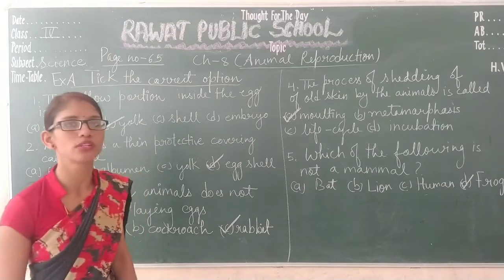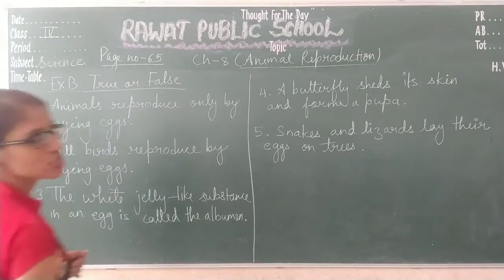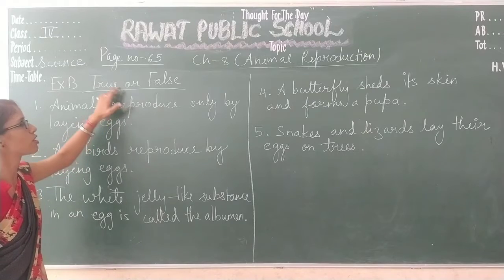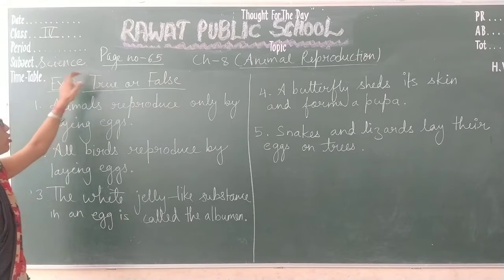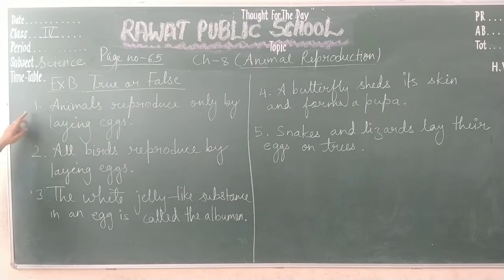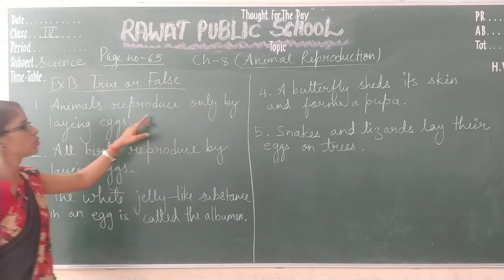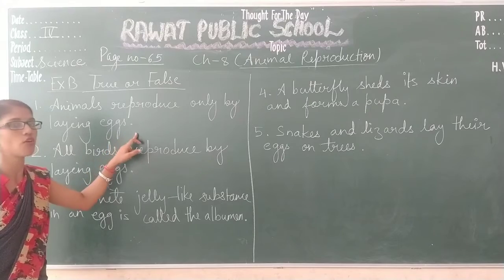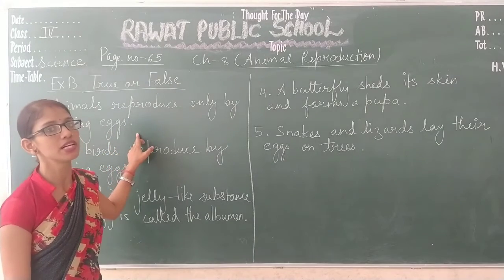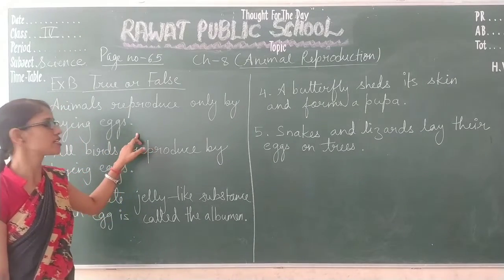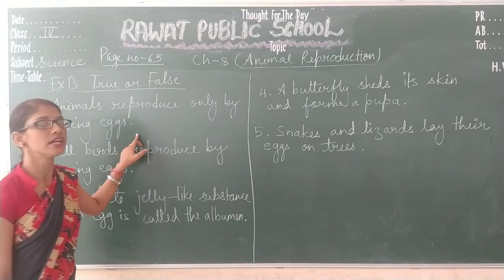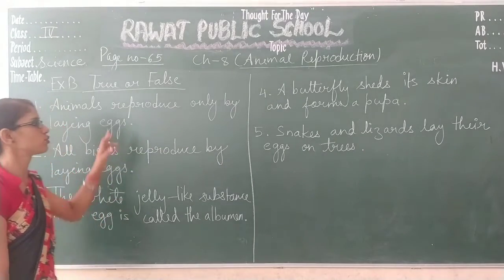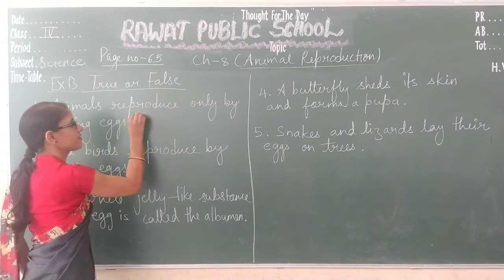Next we will discuss Exercise B, which is True or False. This exercise is also at page number 65. Statement 1: animals reproduce only by laying eggs. This statement is false, because animals reproduce by two ways — first by laying eggs, and second by giving birth to young babies of their own kind. So we write F for this statement.